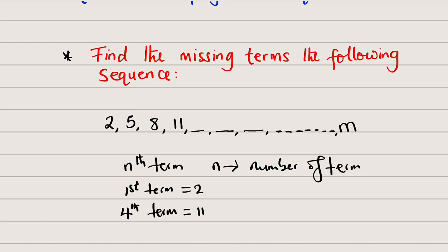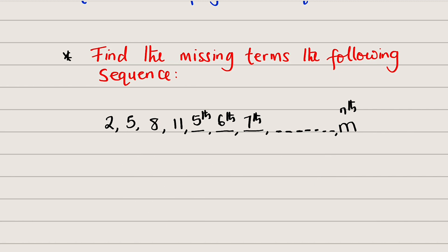So the fourth term is equal to 11. In that order, this is going to be the fifth term, this is the sixth term, this is the seventh term, while this one is the nth term in general. So we want to find the fifth term, sixth term, seventh term, as well as the nth term.